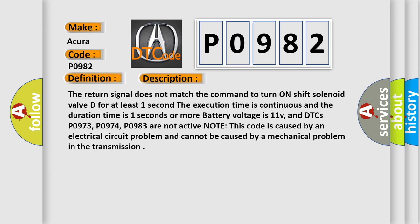The return signal does not match the command to turn on shift solenoid valve D for at least one second. The execution time is continuous and the duration time is one second or more. Battery voltage is 11V, and DTCs P0973, P0974, P0983 are not active. Note this code is caused by an electrical circuit problem and cannot be caused by a mechanical problem in the transmission.